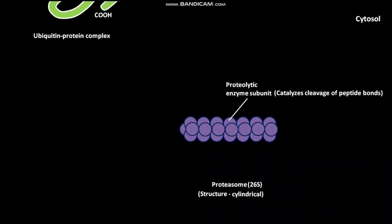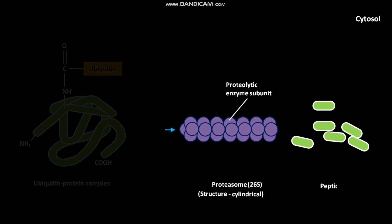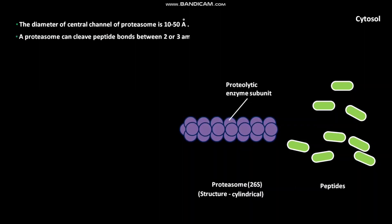The ubiquitin-protein complex then goes into the central channel of the proteasome. Inside the central channel, the ubiquitin-protein complex is degraded, and as a result, peptides are formed. The diameter of the central channel of the proteasome is 10 to 50 angstroms. A proteasome can cleave peptide bonds between two or three amino acid combinations.